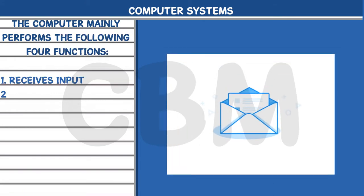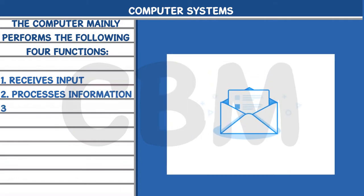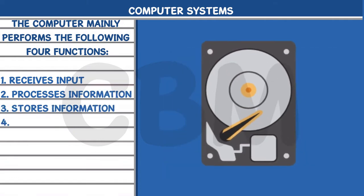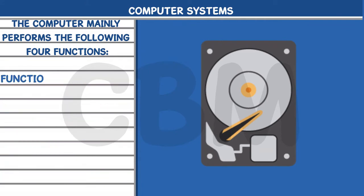1. Receives Input. 2. Processes Information. 3. Stores Information. 4. Produces Output. The computer system includes all the hardware and software required to make it functional for the user.